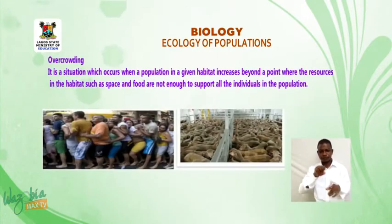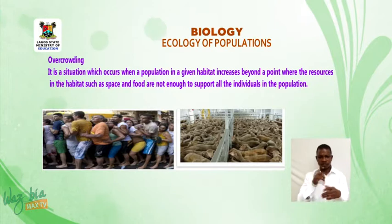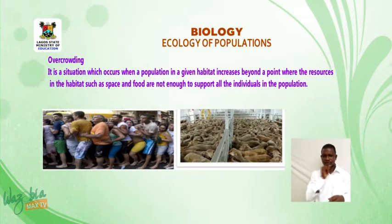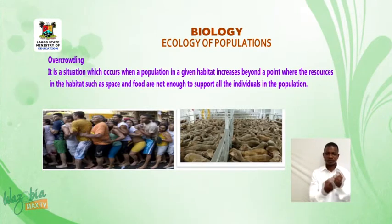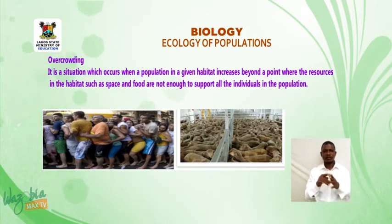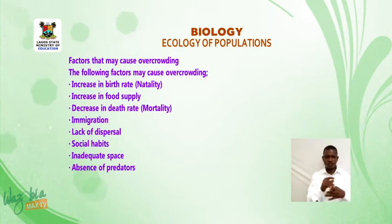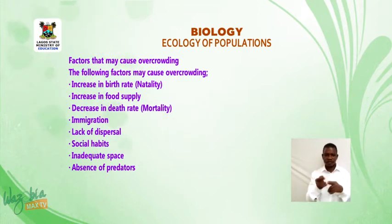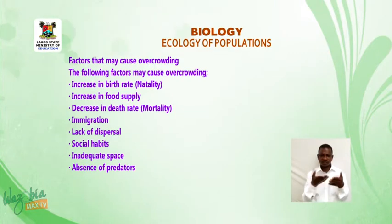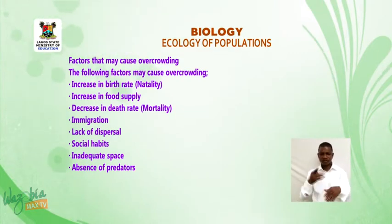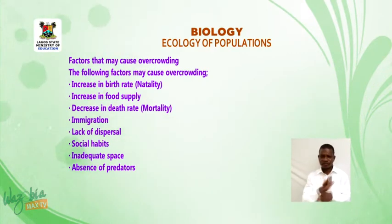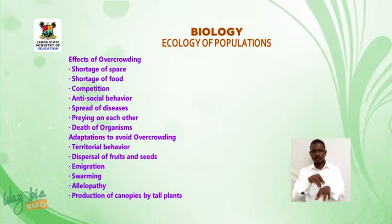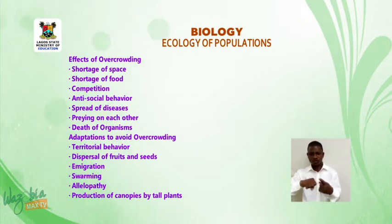Overcrowding is a situation which occurs when a population in a given habitat increases beyond a point where the resources in the habitat — such as space and food — are not enough to support all the individuals in the population. Factors that may cause overcrowding include: increase in birth rate (natality), increase in food supply, decrease in death rate (mortality), immigration, lack of dispersal or social habits, inadequate space, and absence of predators.